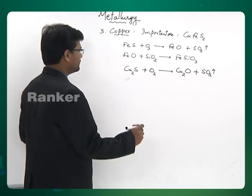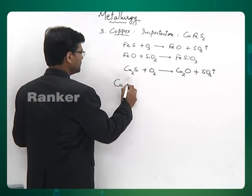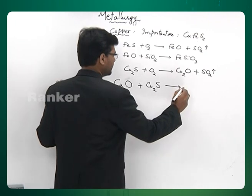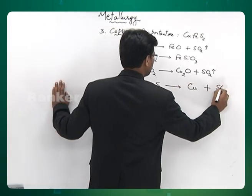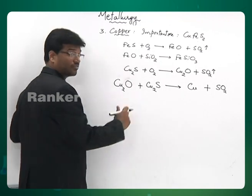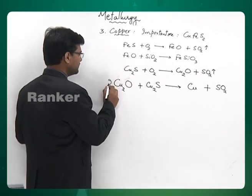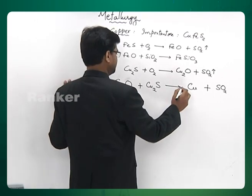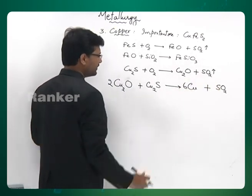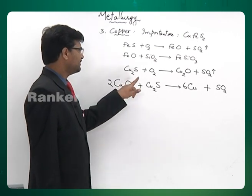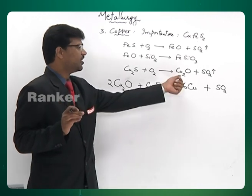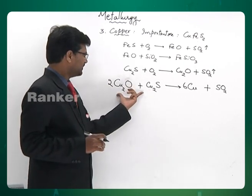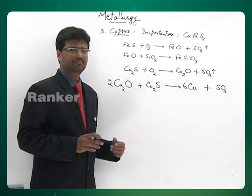When sufficient amount of copper oxide is formed: Cu₂O reacts with the remaining Cu₂S to give copper plus SO₂. This is called auto reduction. Balancing: two moles of Cu₂O react with one mole of Cu₂S to give six moles of Cu and one mole of SO₂. That means two-thirds of cuprous sulphide must be oxidized and one-third must remain, so that this two-to-one reaction gives metallic copper.